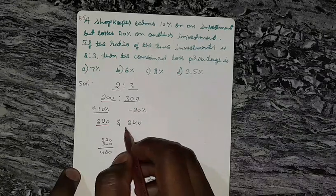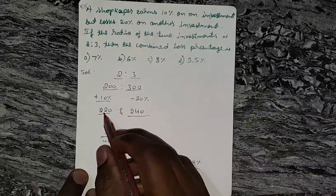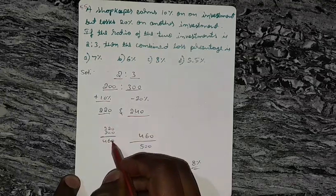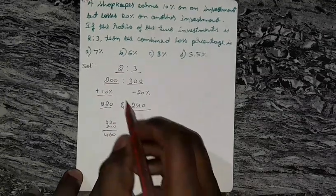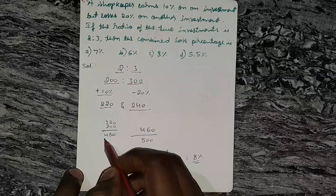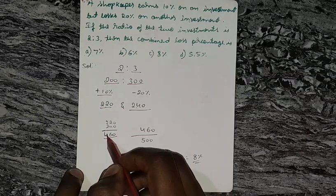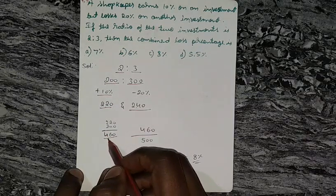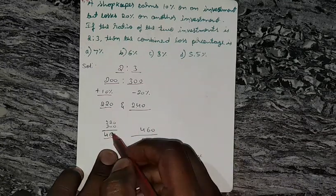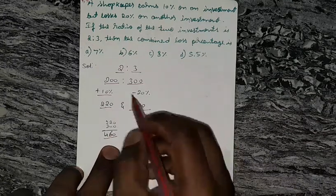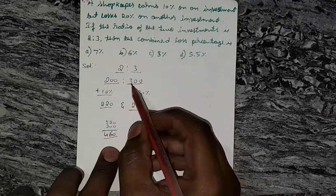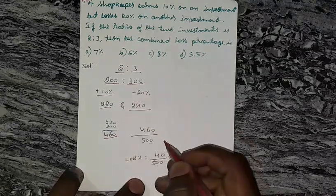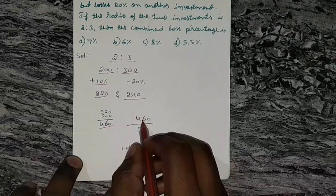300 minus 60 is equal to 240. Now our total will be 460, this is the value after investment. After getting, after the investment he got 460, but he is initially investing 500. So loss percentage is 460 by 500 into 100.